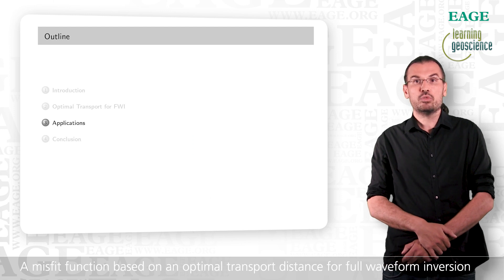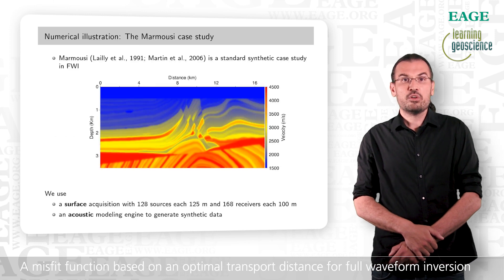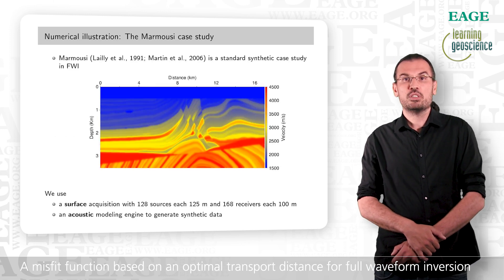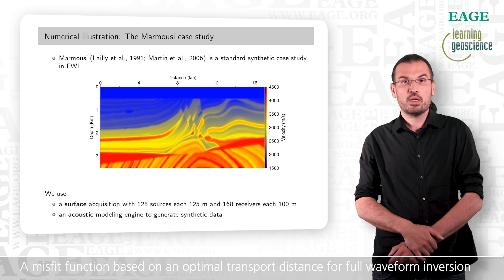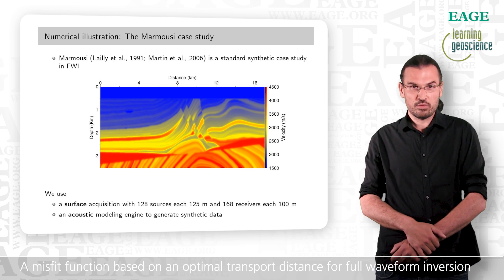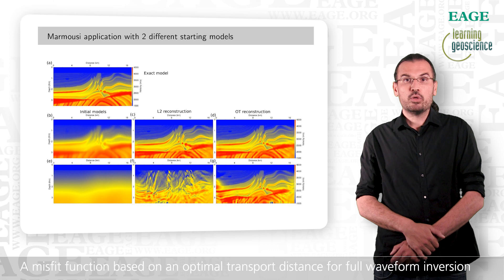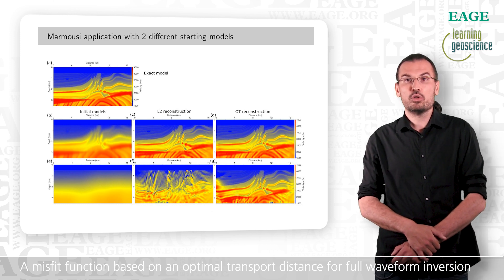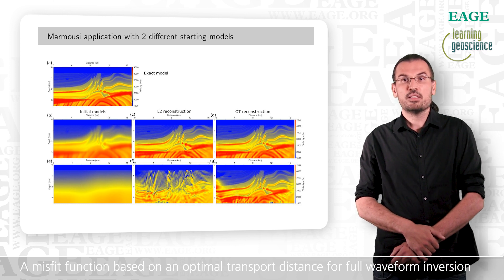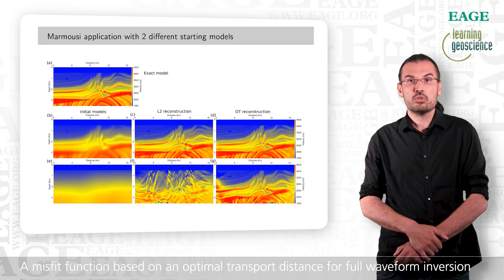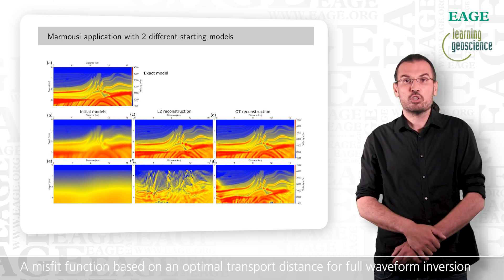Now we can move to two applications of this optimal transport distance. The first case study we are going to consider is based on the Mar-Mouzi model, with an acquisition at the surface, and an acoustic approximation for the computation of the synthetic data. We consider two initial models, one is close from the true one, and another much less close. Starting from the first one, both the least squares and optimal transport approaches converge towards a reliable estimation of the true model.